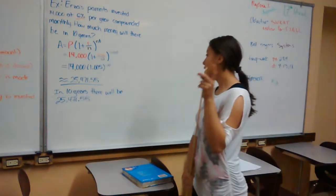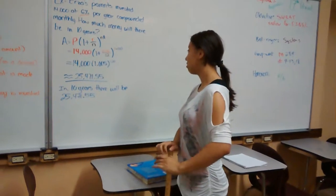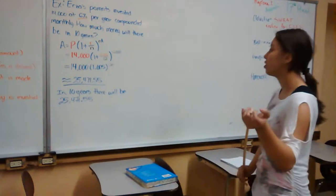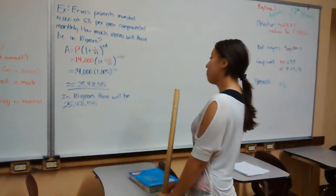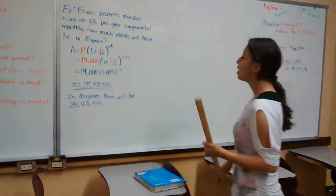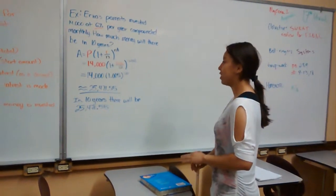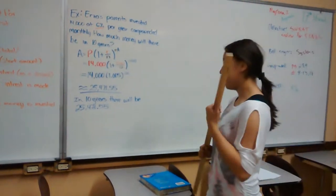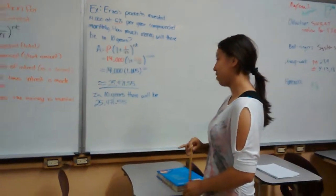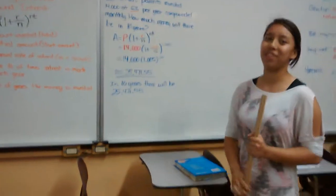Simplified it would be 14,000 times open parenthesis 1.005 close parenthesis to the power of 120. So the answer to that would be $25,421.55. So in 10 years, that would be $25,421.55.